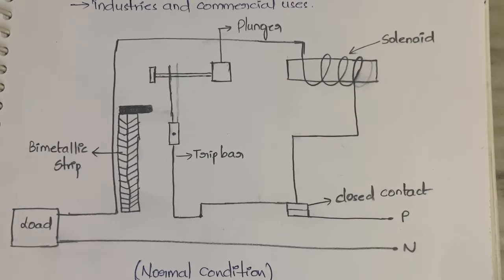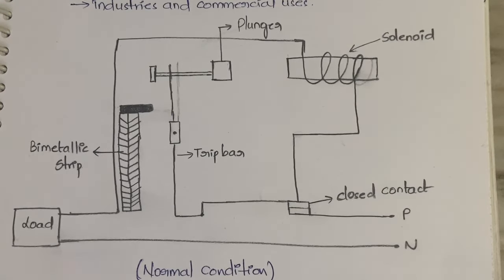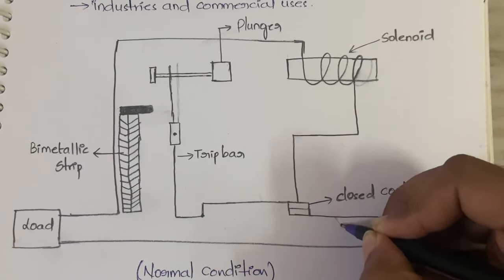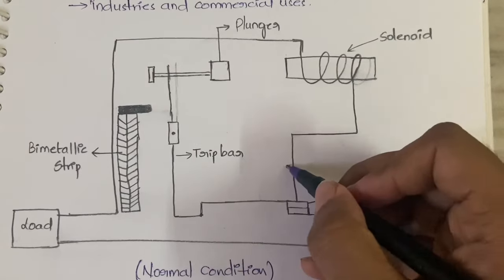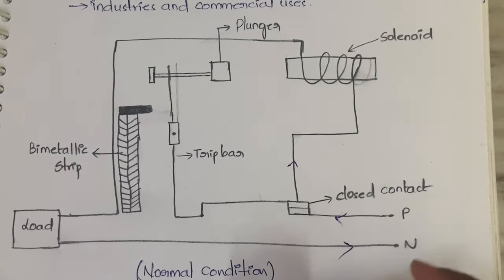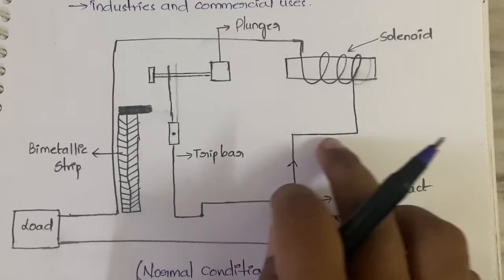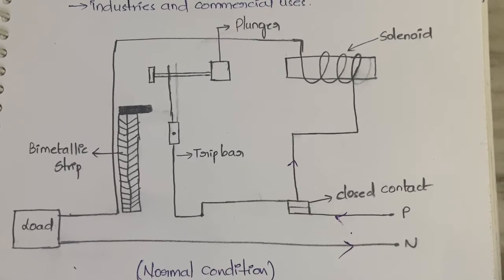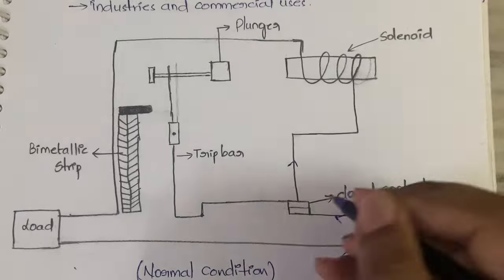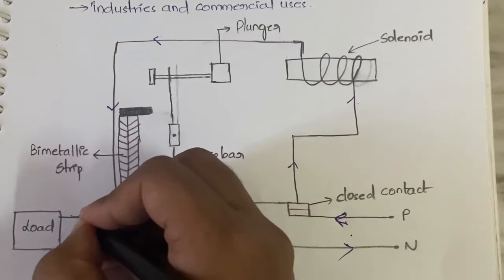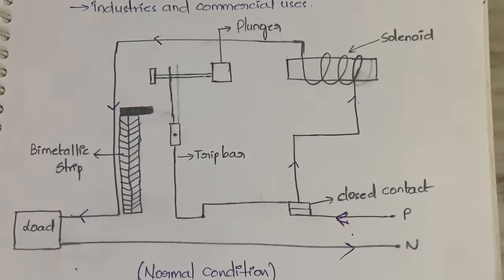In case of normal condition, current flows from the phase through the closed contact, then to the solenoid, then to the bimetallic strip, and from the bimetallic strip to the load, and from the load it goes back to the neutral. So the flow is: phase → closed contact → solenoid → bimetallic strip → load → neutral. This is the normal condition current flow.